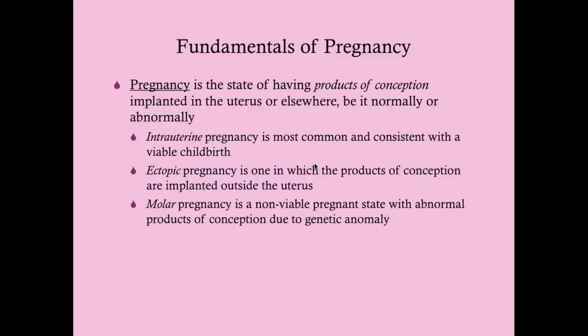An intrauterine pregnancy is the most common result of fertilization and is consistent with viable childbirth. In rare cases, a pregnancy can result from a tubal implantation — that would be considered an ectopic pregnancy. An ectopic pregnancy is any pregnancy where implantation occurred somewhere other than the uterus, such as in the tubes or adnexa.